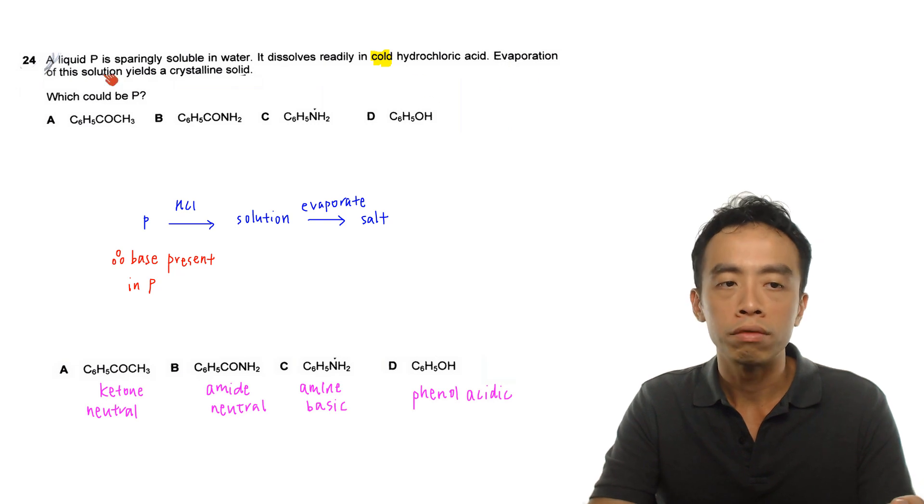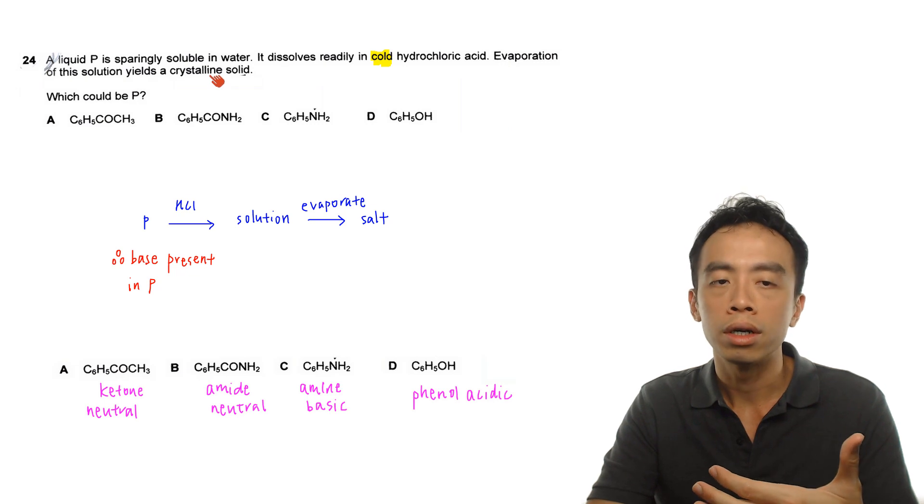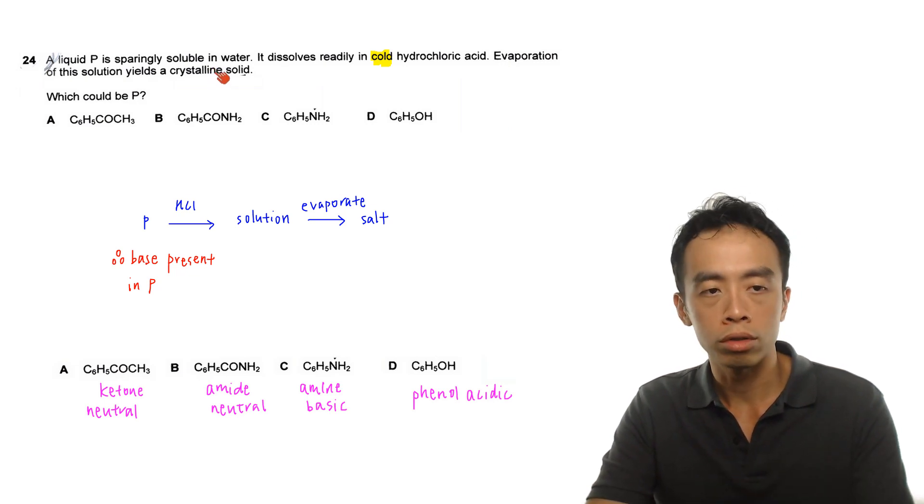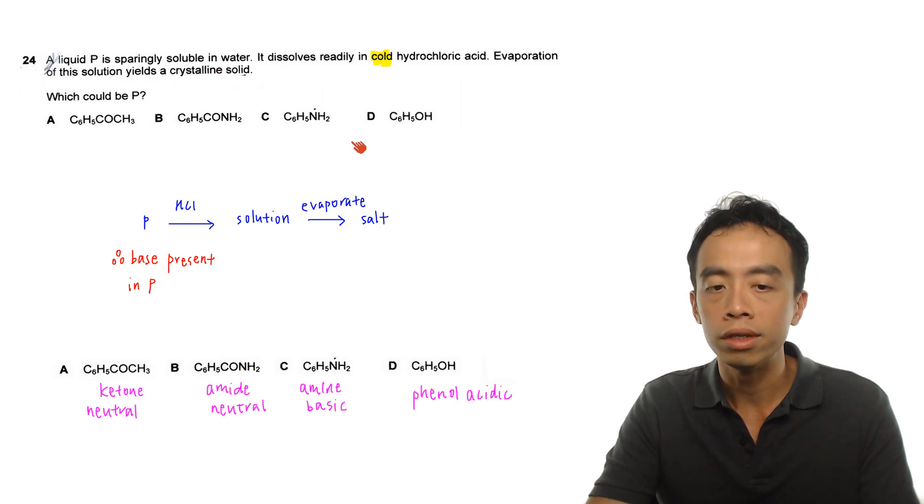Then evaporation of this solution yields a crystalline solid because the salt is an ionic compound, right? So evaporation of the water, when the water is gone, then I'm left with this ionic compound, or this salt.